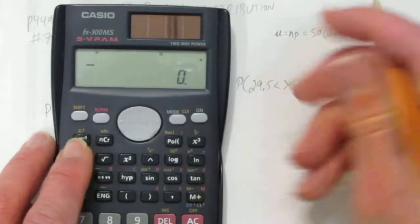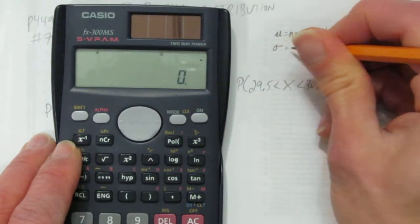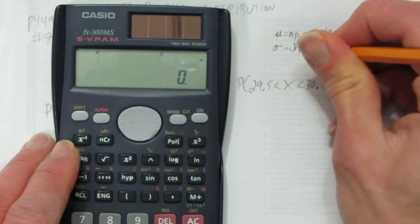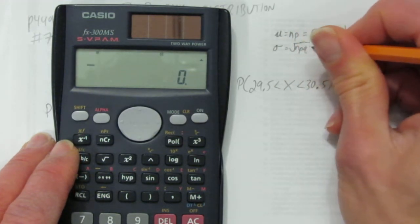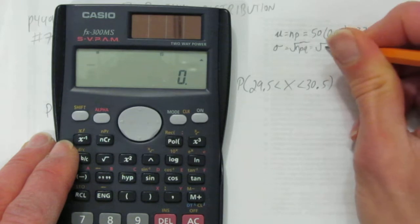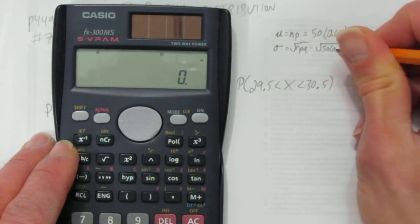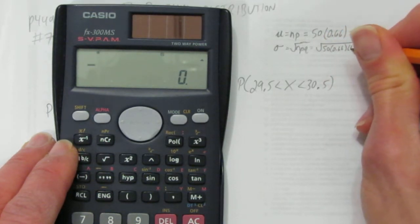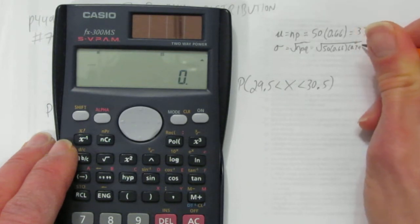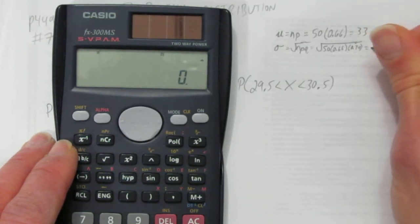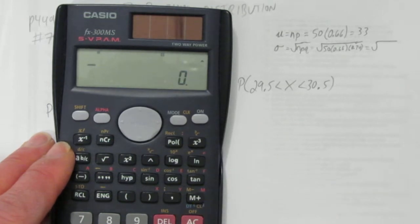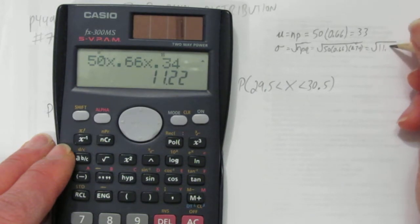And we want to calculate the standard deviation which is the square root of n times p times q. That's the square root of 50 times 0.66 times 0.34, which is the square root of, that's 50 times 0.66 times 0.34, square root of 11.22.